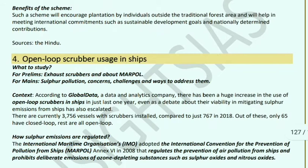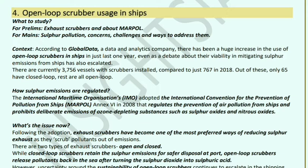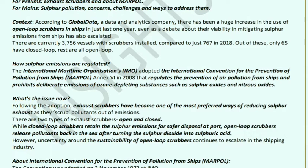Open Loop Scrubber Usage in Ships: According to global data and analytics company Global Data, there has been a large increase in open loop scrubbers in ships in the past year, even as the debate continues about their viability in mitigating sulfur emissions. Currently 3,756 vessels have scrubbers installed, compared to 767 in 2018. Of these, 65 are closed loop, and the rest are open loop.